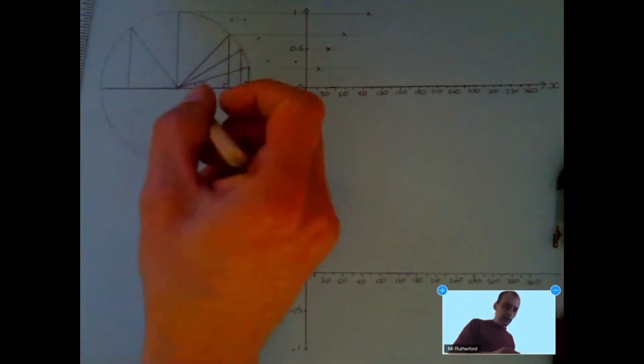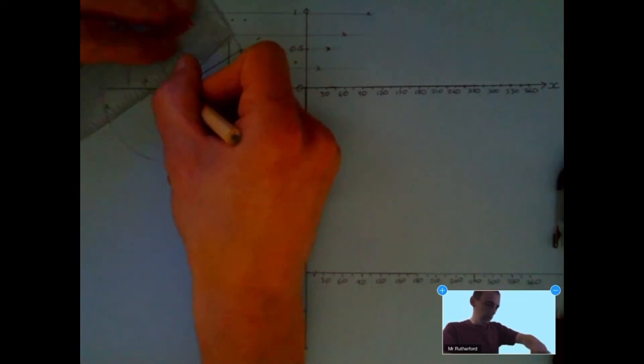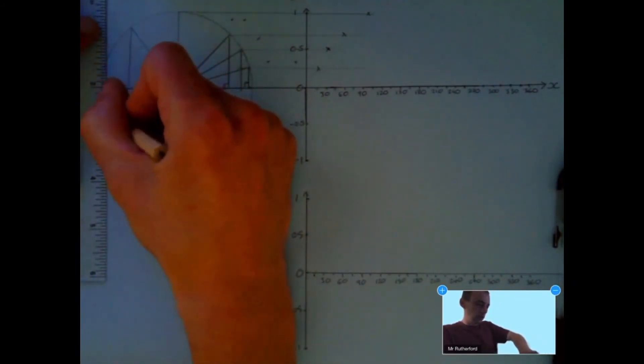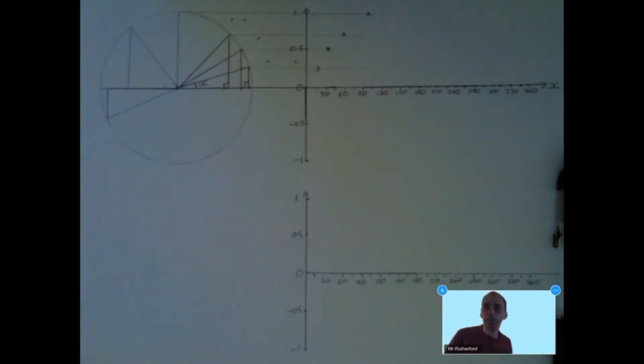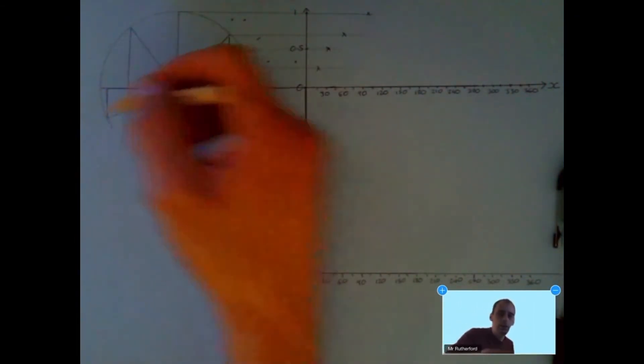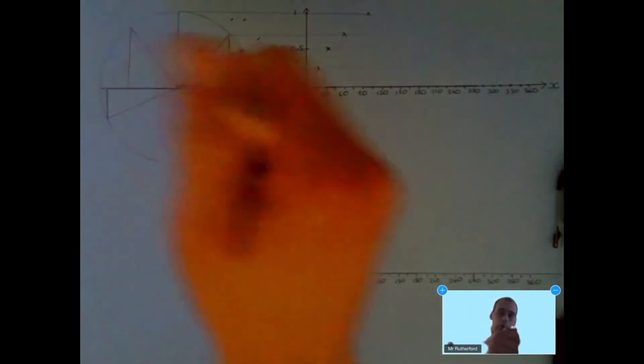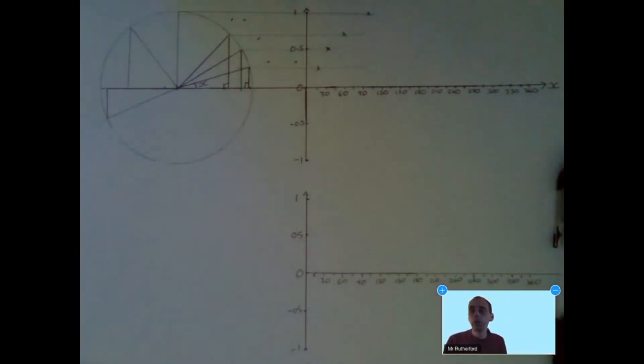When we go beyond 180 degrees, so for example, here, the opposite side is now going below the X-axis, so we're going to have negatives. Once you've gone on, and you have completed all of your points, you should be able to join them with a nice, smooth curve.